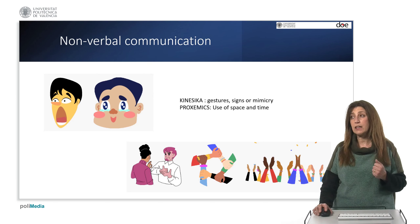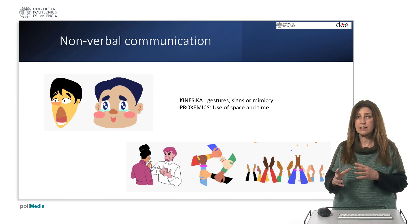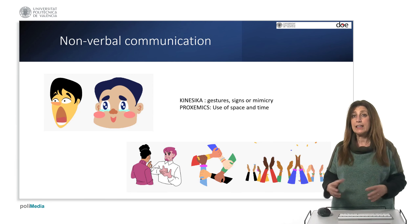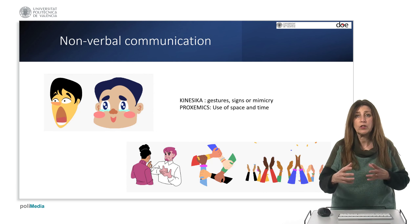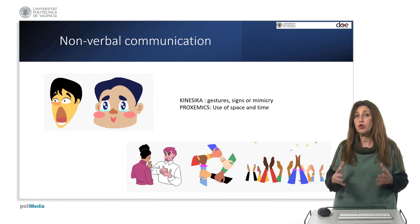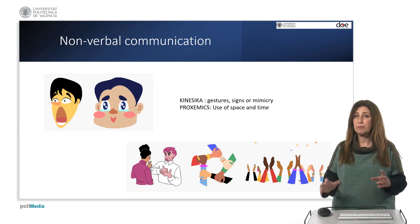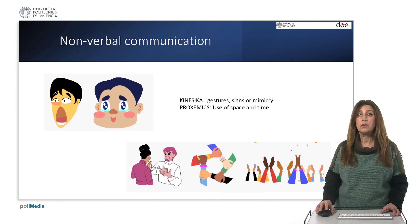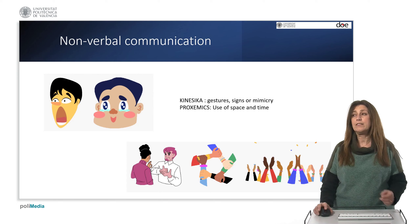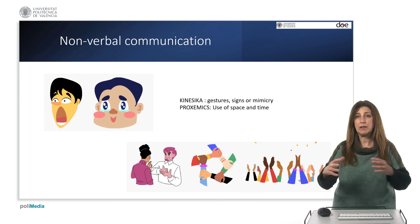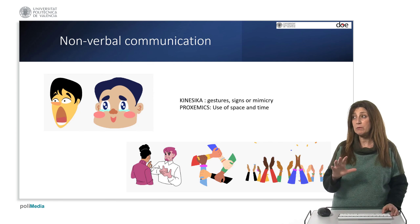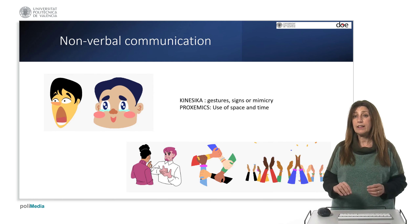We distinguish in the analysis of nonverbal communication between kinesthetic signs — which are focused on gestures, signals, facial expressions, posture, and looks — and proxemic signs, which are related to the use of space. For example, it is very important to control the distances we keep between us, depending on whether we are in a more formal, more informal, or more intimate environment, or we are with co-workers. Respecting personal space is important, and it is also essential to understand that this space is perceived differently depending on the culture or country we are in.